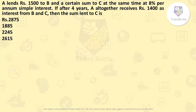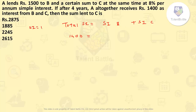Next question: A lends Rs 1,500 to B and a certain sum to C at the same time at 8% per annum simple interest. If after 4 years A altogether receives Rs 1,400 as interest from B and C, find the sum lent to C. Total simple interest received by A equals SI from B plus SI from C, which is 1,400. The formula for simple interest is P×R×T / 100. Principal for B is 1,500, rate is 8%, and time is 4 years.